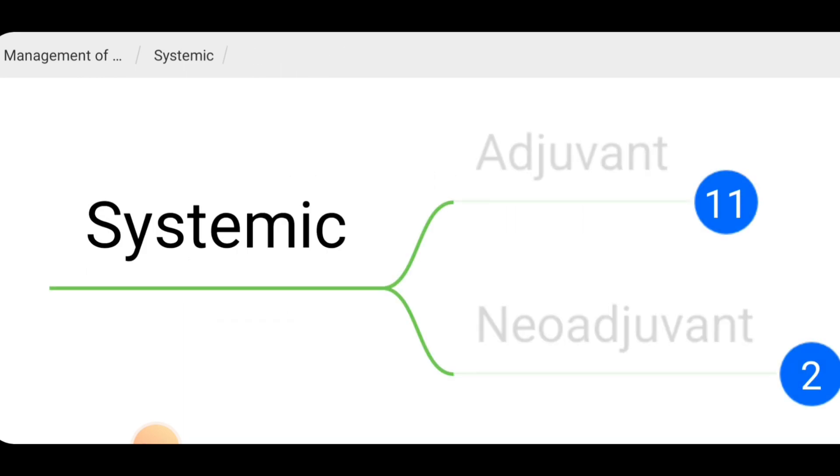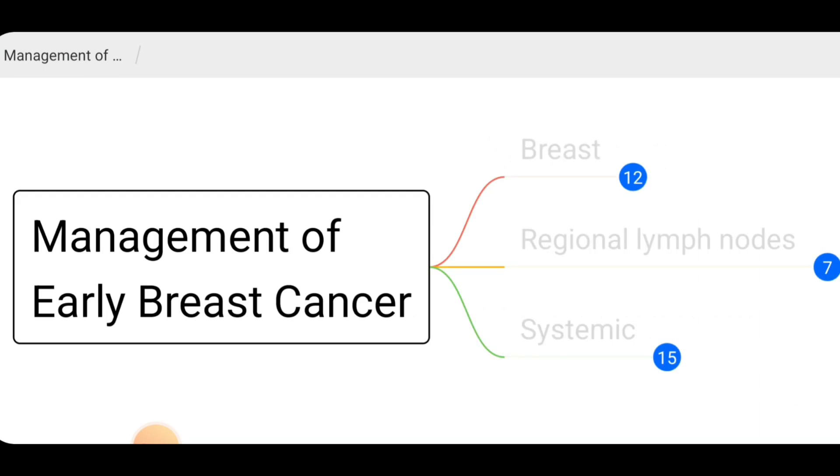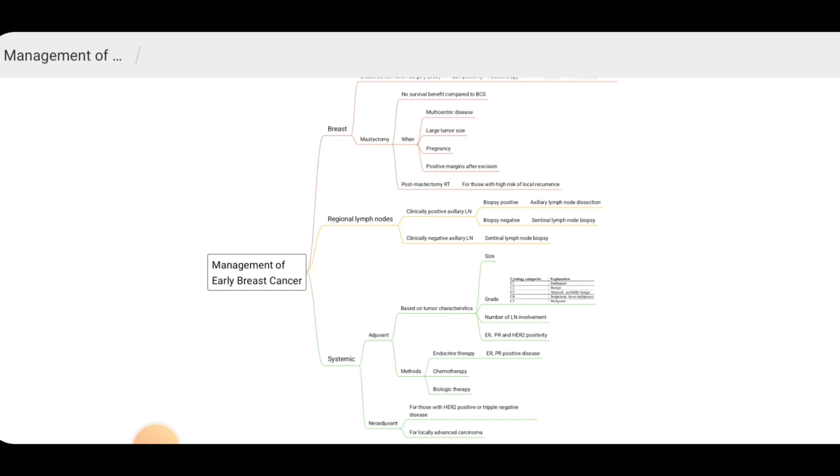And that concludes our discussion on the management of early breast cancer. In summary, early breast cancer can be managed through breast conservation surgery such as lumpectomy or wide local excision with post-operative radiotherapy, or through mastectomy which is preferred in certain situations. Management of regional lymph nodes can be done depending on the presence of clinically positive lymph nodes or otherwise with sentinel lymph node biopsy. Systemic management can be achieved through adjuvant or neoadjuvant therapies based on tumor characteristics and may include endocrine therapy, chemotherapy, or biologic therapy. Overall, early breast cancer can be successfully managed with appropriate treatments tailored to each patient's individual needs.